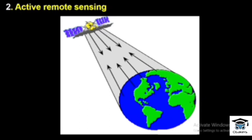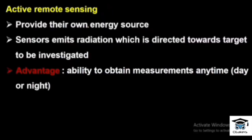In contrast, active remote sensing provides its own energy source. When using active remote sensing, the sensor itself acts as the energy source. Sensors emit radiation which is directed towards the target to be investigated. The radiation hits the target and reflects back to the sensor again.